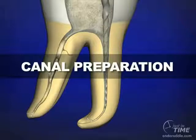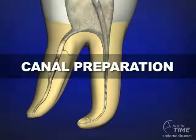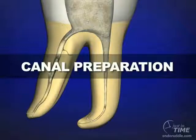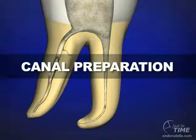There's significant controversy even regarding canal preparation. There are basically two schools of thought. One school thinks we need to take the terminal parts of canals up to a minimum size 40 file — for two reasons: to make them rounder and to help exchange irrigant more effectively. The other school of thought wants to keep the foramen as small as anatomically practical, with more emphasis on deep shape. It has been shown by Baumgartner in the Journal of Endodontics that there's no statistically significant difference between a 40-06 preparation and a 20-10.